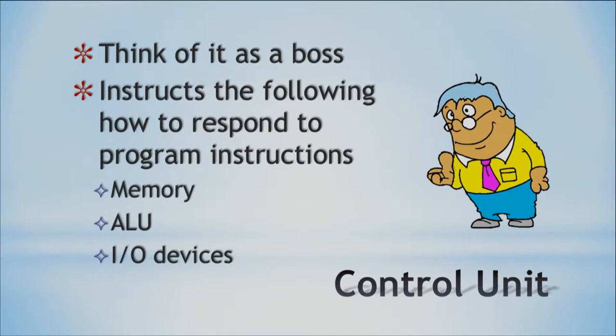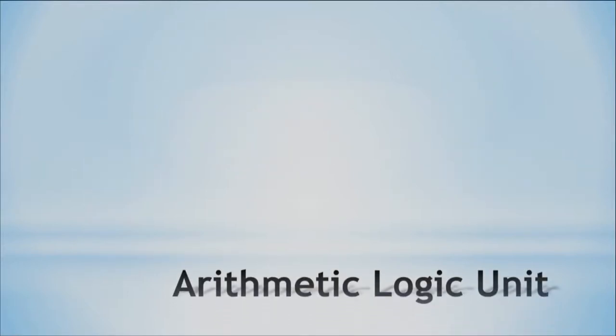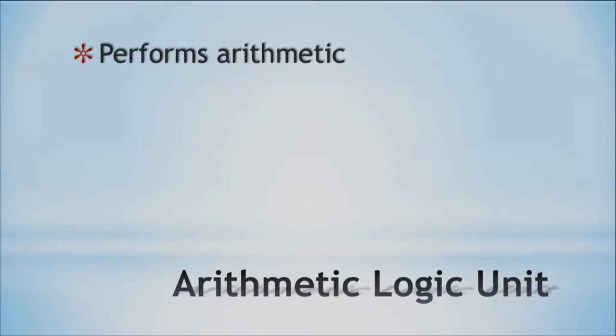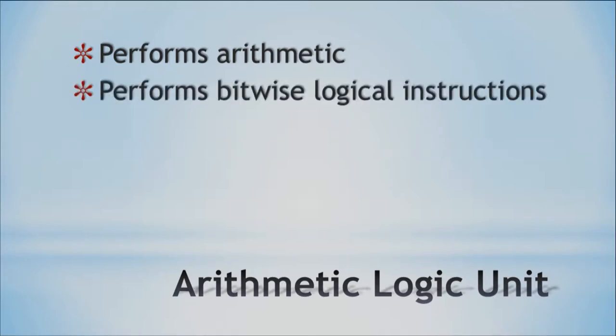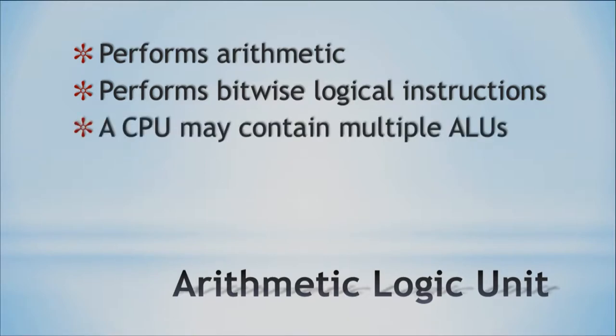The next part is the ALU — the arithmetic logic unit. This is important because it performs your basic arithmetic within your computer. It does all your mathematics and computations for you, and it performs bitwise logical instructions. Bitwise functions are operations performed on a single bit at a time. A CPU can also contain multiple ALUs, so it's not just one ALU for an entire system — there can be multiple ones so that multiple arithmetic calculations can be performed at the same time.